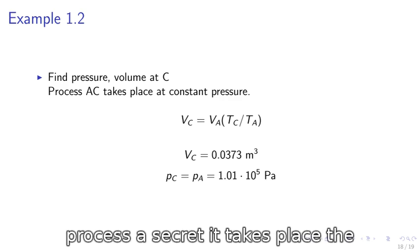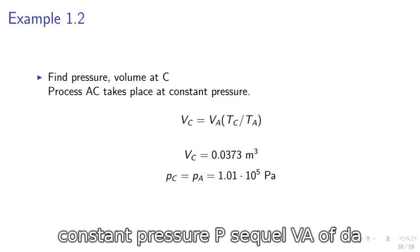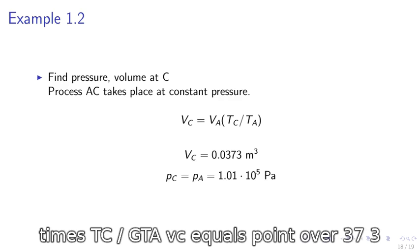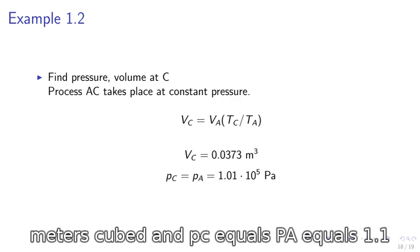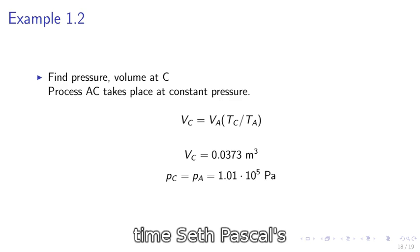We find the pressure and volume at C. Process AC takes place at constant pressure. Vc equals VA times TC over TA. We obtain Vc equals 0.0373 meters cubed. And Pc equals PA equals 1.01 times 10 to the 5th Pascal.